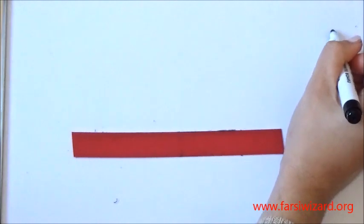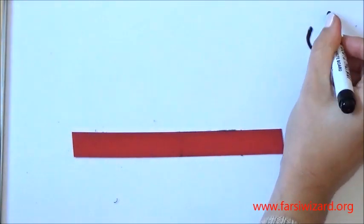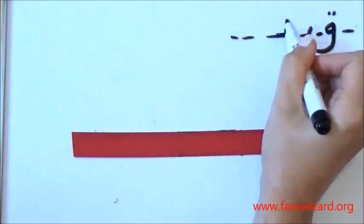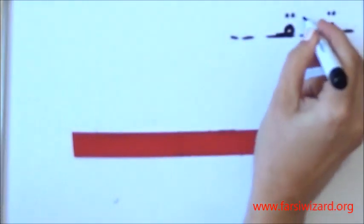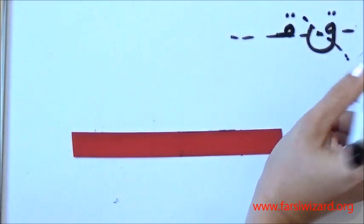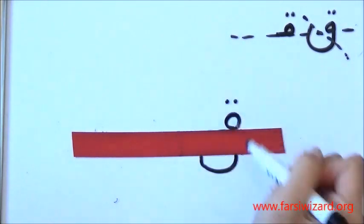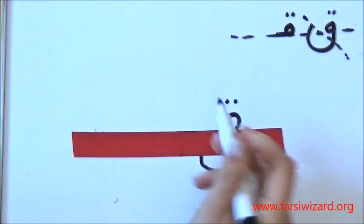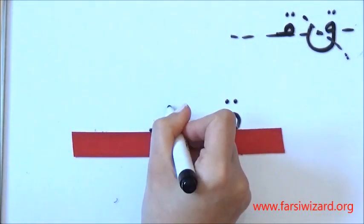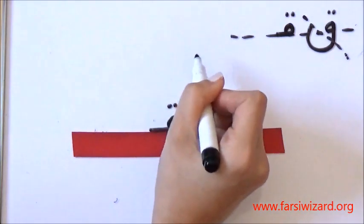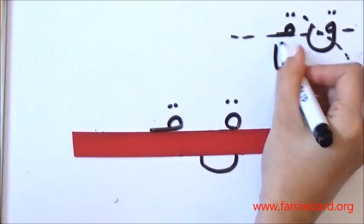Now, the second letter Qaf. Pronunciation-wise, please don't try to pronounce it exactly as Iranians because you're going to get a sore throat. Just do your best. It's glottal Q, Qaf. The complete form and the small form, as you can see, with the head above the line and the belly under the line.